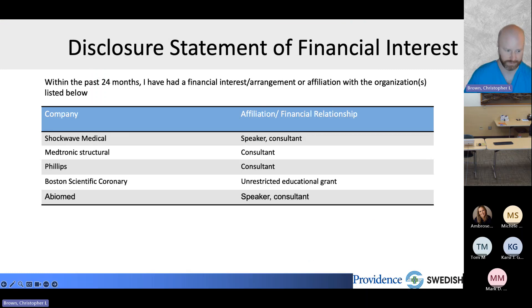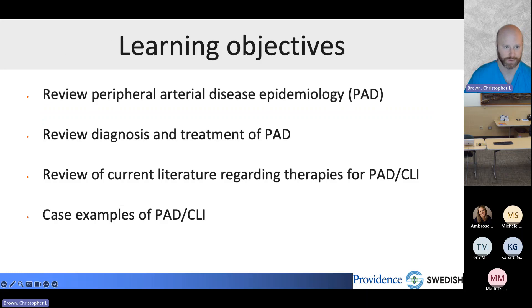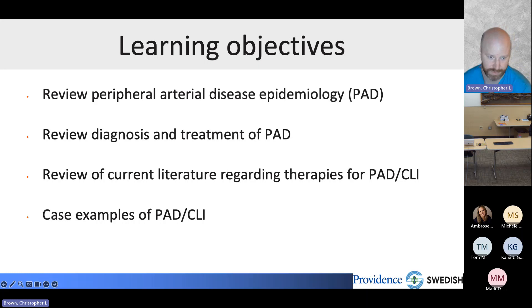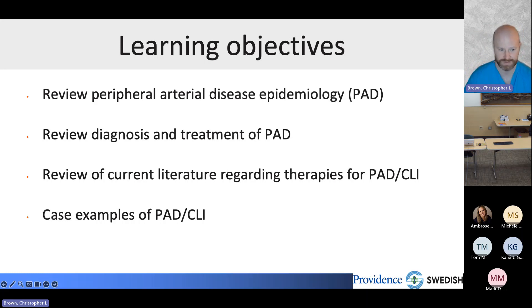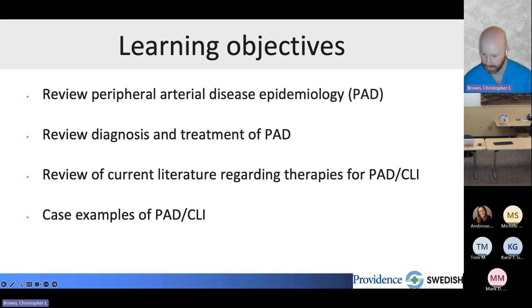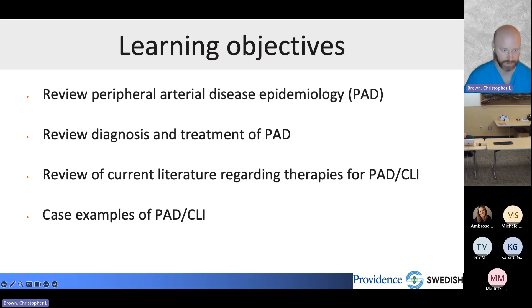These are my disclosures, though I don't think any are directly relevant to this talk. Our learning objectives today are relatively straightforward: I'd like to review peripheral arterial disease and its epidemiology to help identify the right patients to screen, review the diagnosis and treatments of PAD, review current literature regarding therapies for PAD and critical limb ischemia, and present some case examples. We won't spend a lot of time arbitrating surgical versus endovascular revascularization, as those comparisons have been done extensively elsewhere and are essentially equivalent.